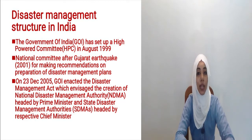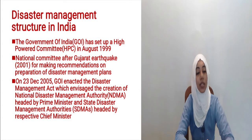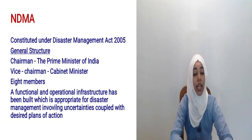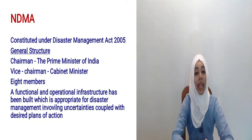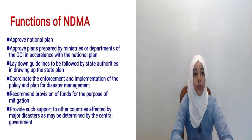This led to the formation of the National Disaster Management Authority, headed by the Prime Minister, and State Disaster Management Authority, headed by respective Chief Ministers. The NDMA structure has a Chairman who is the Prime Minister of India, a Vice Chairman who is a Cabinet Minister, and 8 members. NDMA has a functional, operational, and infrastructure setup.